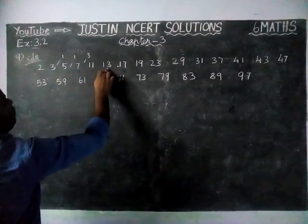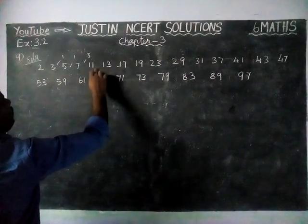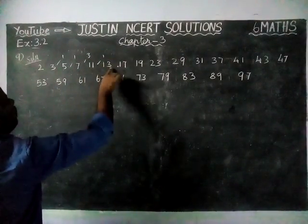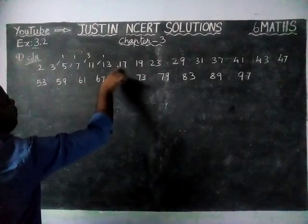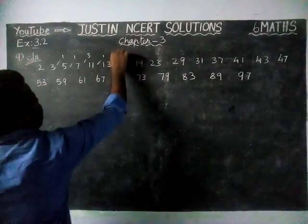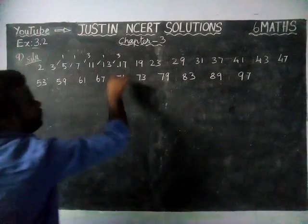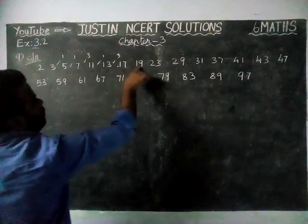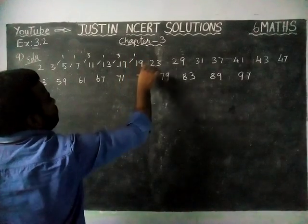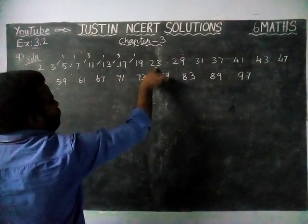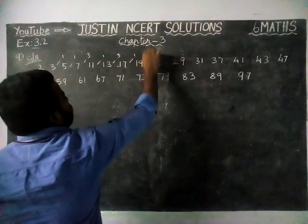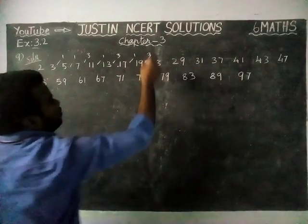From 11, 12 — between 13 and 17: 14, 15, 16 — only 3 numbers. From 17, 18 — only one number. From 19 to 23: 20, 21, 22 — only 3 numbers.